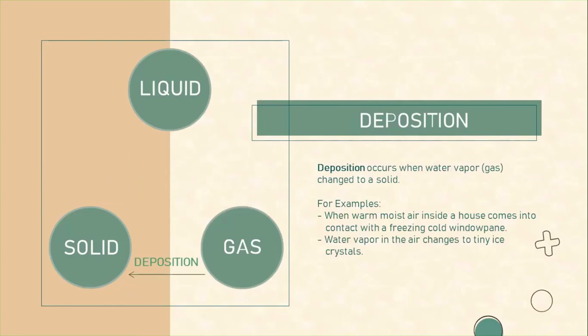And the last is deposition. Deposition occurs when water vapor or gas changes to a solid. For example, when warm moist air inside a house comes into contact with a freezing cold windowpane, and water vapor in the air changes to tiny ice crystals.